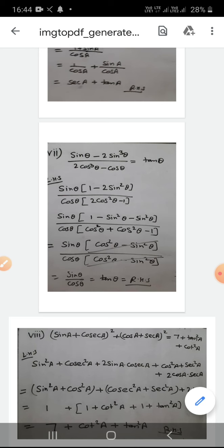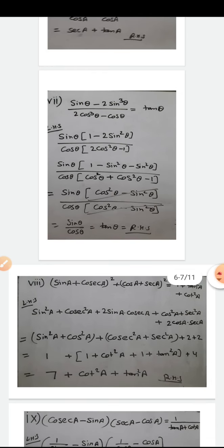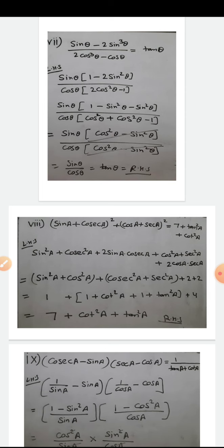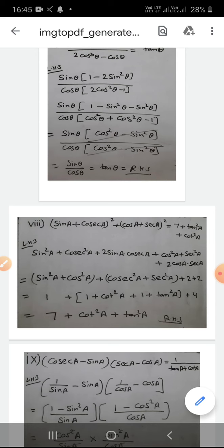Part 8: prove (sin A + cosec A)² + (cos A + sec A)² = 7 + tan²A + cot²A. This is a straightforward question — you open the whole square brackets. Expanding: sin²A + cosec²A + 2·sin A·cosec A + cos²A + sec²A + 2·cos A·sec A.